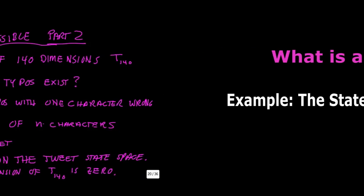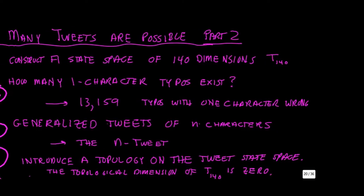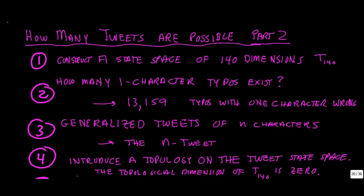Good morning. Today we're going to look at some further mathematical constructions based on Twitter. In the last video, we discussed how you could calculate the set of all possible distinct tweets on Twitter and found the tweet number — the very large number of tweets that are possible. In the next few videos, we're going to find a number of very interesting mathematical spaces useful for getting a deeper understanding of the mathematical structure of tweets.